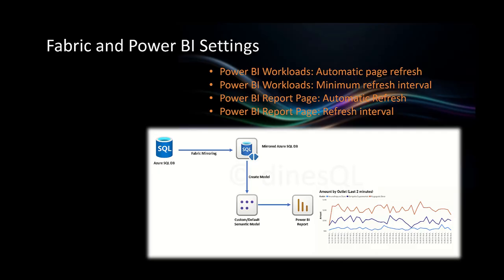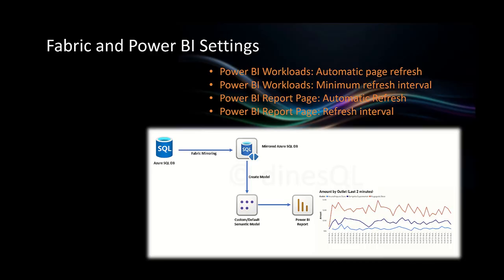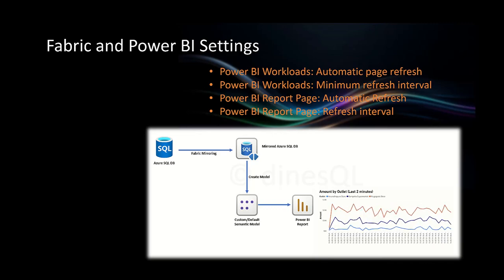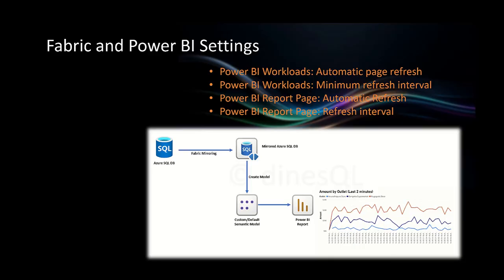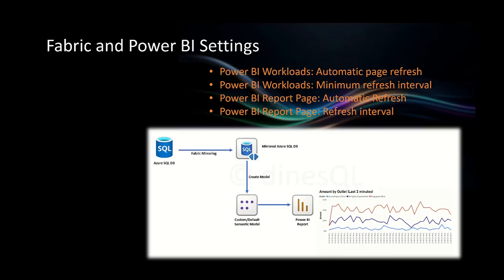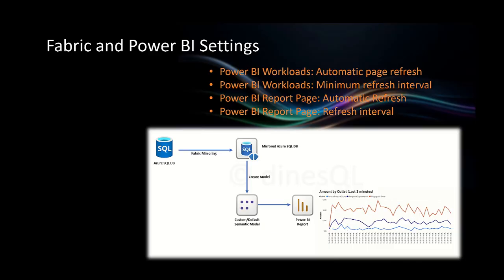When you create a Power BI report you can have multiple pages, and this setting has to be configured per page. If you need automatic refresh on all pages, you need to enable it for each one. Go to the page properties, find the automatic refresh section, enable it, and configure the refresh interval. Note: if the capacity minimum refresh interval is set to one minute, configuring the report page to 30 seconds won't work.